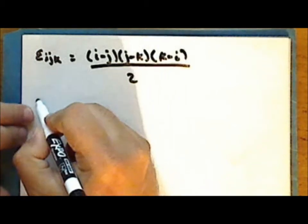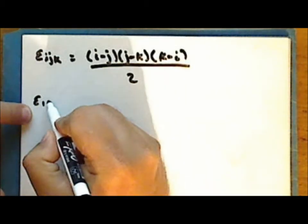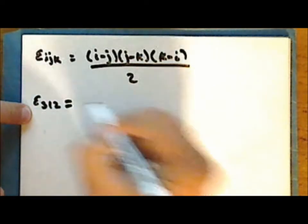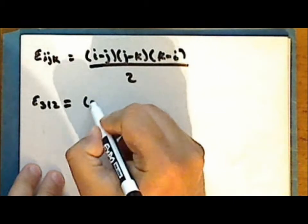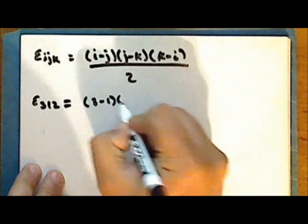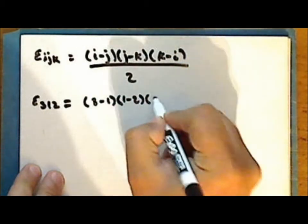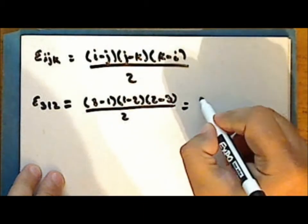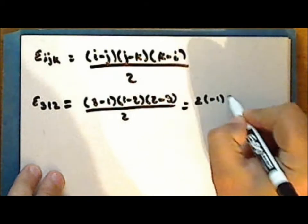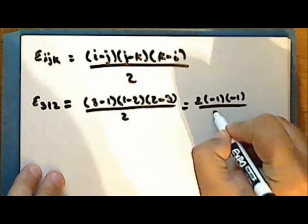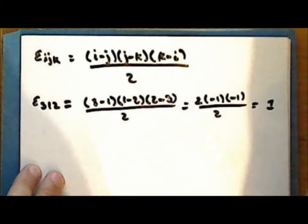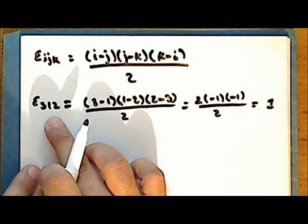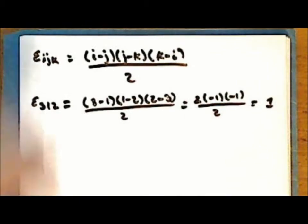For example, epsilon 3, 1, 2 equals (3 minus 1) times (1 minus 2) times (2 minus 3), all divided by 2. This gives us 2 times negative 1 times negative 1, all divided by 2, which gives us 1. So the permutation 3, 1, 2 is even, and this agrees with what we determined earlier.